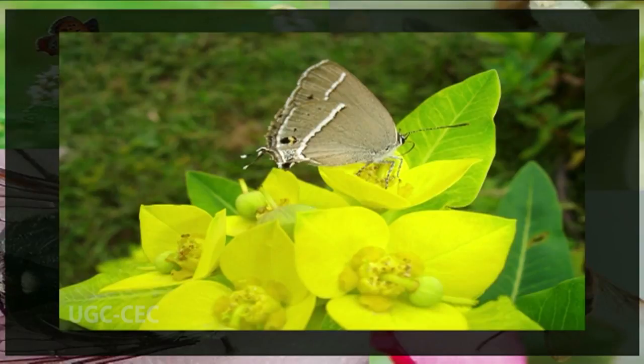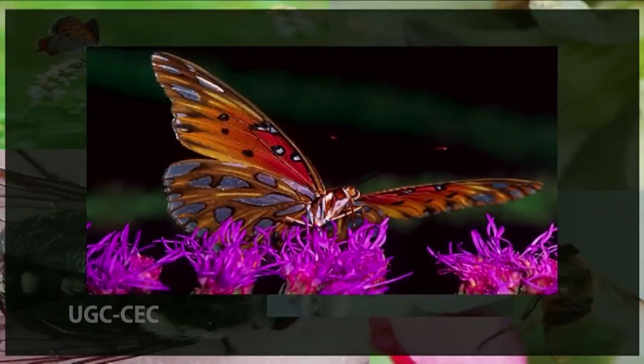Butterfly-pollinated flowers are brightly colored but odorless; often they occur in clusters, as in family Compositae, and are designated with a landing platform. Butterflies walk around a flower cluster, probing the blossoms with their tongues, and each flower has a tube of suitable length for the butterfly's tongue. Many butterflies produce scents that attract the opposite sex, and many of these scents often smell like the flowers that they visit. The scents of butterfly-pollinated flowers might have evolved as an adaptation that made use of the existing attractiveness of these scents.